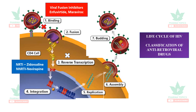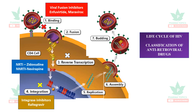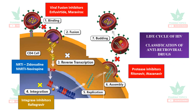Reverse transcription is the conversion of viral RNA to viral DNA. Integrase inhibitors block the next step — the integration of viral DNA into the host or CD4 cell DNA. Protease inhibitors are also very important; they inhibit the development of polypeptides into functional proteins and also inhibit viral budding.